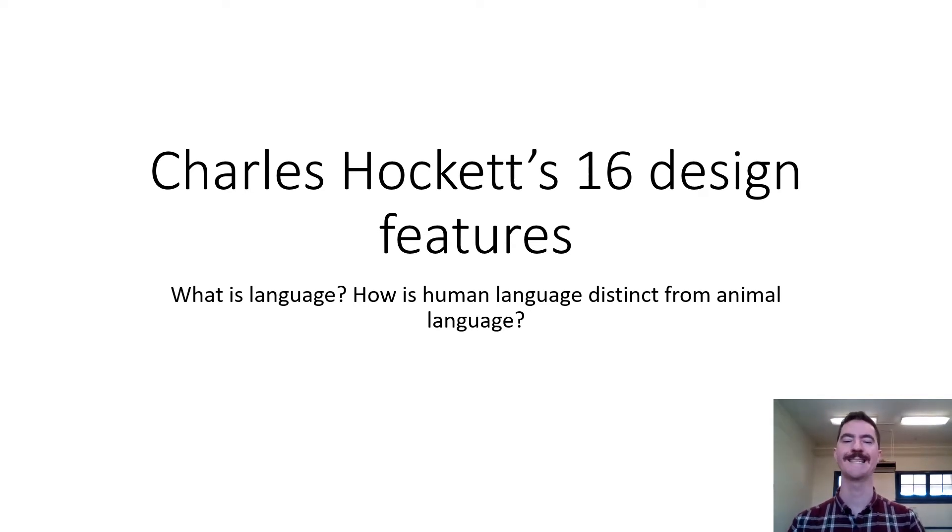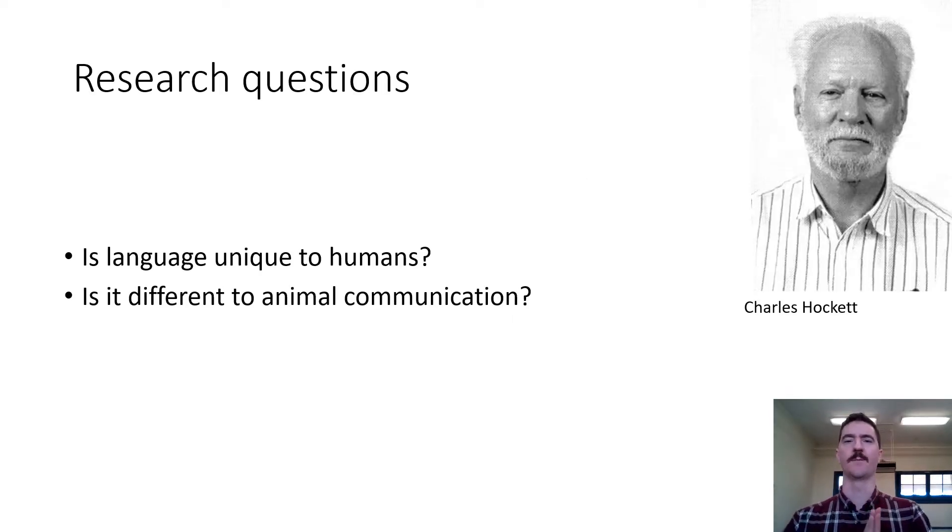This is Charles Hockett's 16 design features for human language or the distinction between animal and human language. The research question in theory is what is language, but instead of just looking at it in and of itself, it's essentially looking at human communication versus animal communication, with human being the priority and animal being the different, the other, the inferior.